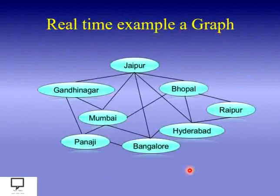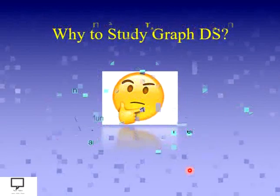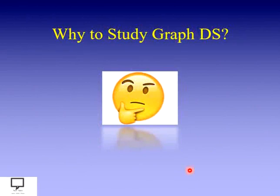Here I am giving a real-time example of a graph. You can see that these are the capitals of different states of India. They are connected with each other, and to represent the connection between these cities we use a graph data structure.